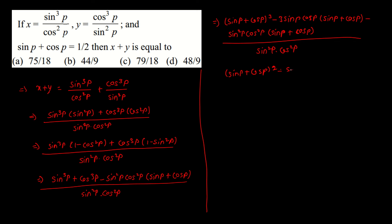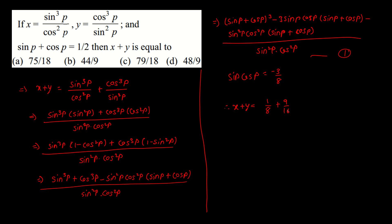Using the identity (sinp + cosp)² = sin²p + cos²p + 2sinp·cosp, and since sinp + cosp = 1/2, you get sinp·cosp = −3/8. Substituting back into equation 1, x + y works out to 1/8 + 9/16 − 9/32, all over 9/16, which equals 79/18.